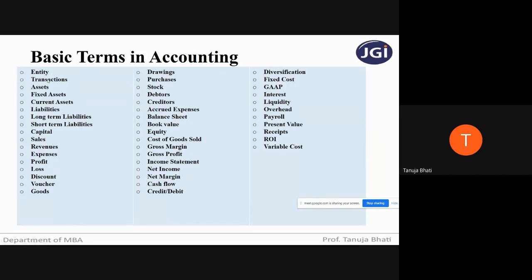Each entity has a different set of laws and regulations. Whatever laws are applicable to a sole proprietor, there is a different act applicable to a partnership firm, and whatever laws apply to a partnership firm won't be applicable to a company. So each entity has a unique set of requirements, unique set of laws, and tax implications. Entity is nothing but a legal structure or a type of business.